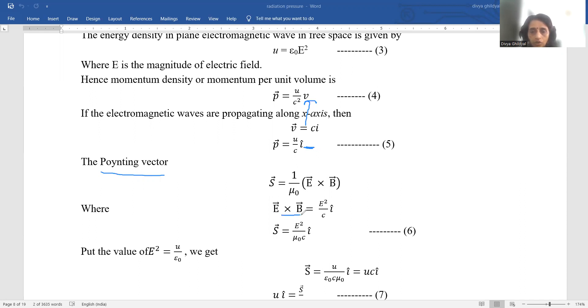So it is given by s is equal to 1 upon mu naught e cross b. Now e cross b is equal to e square upon c into the i variant.